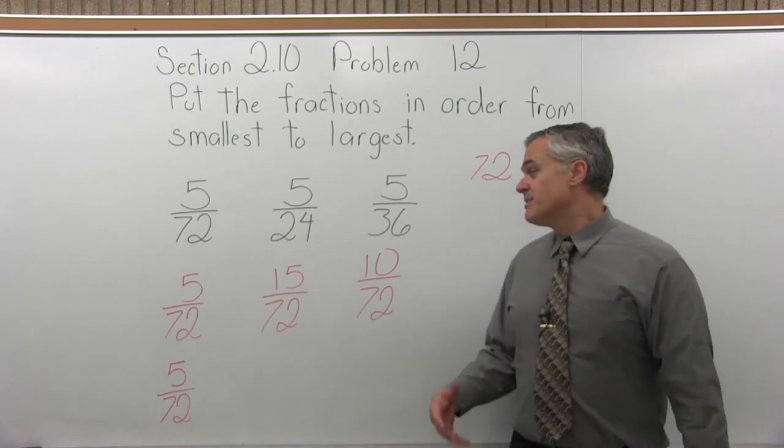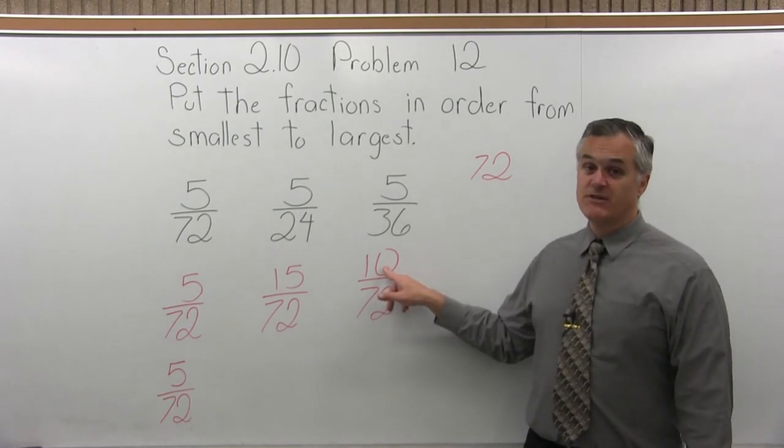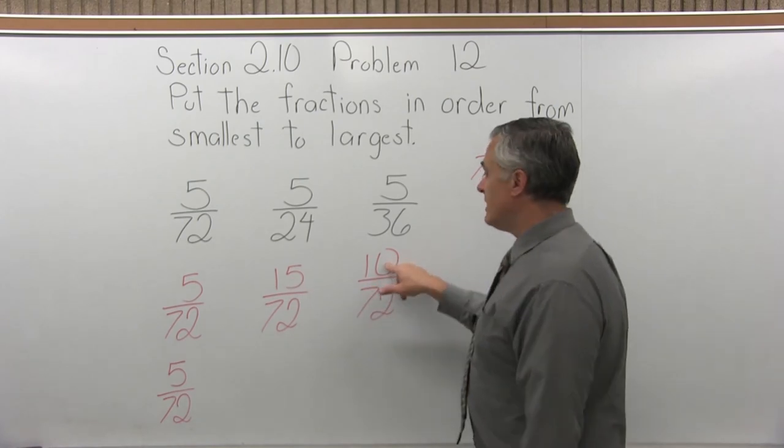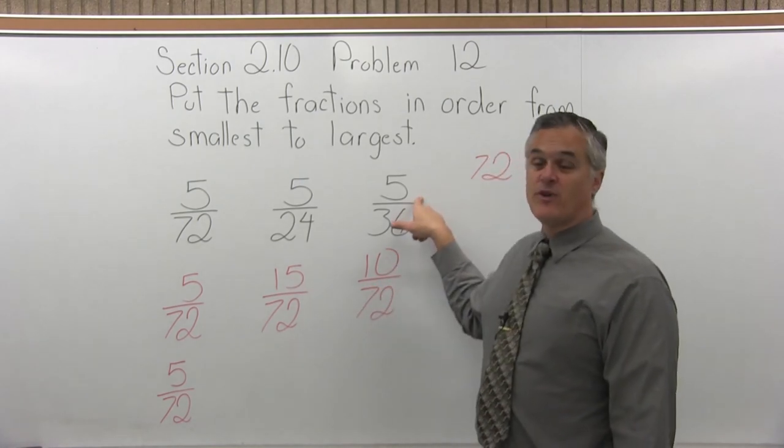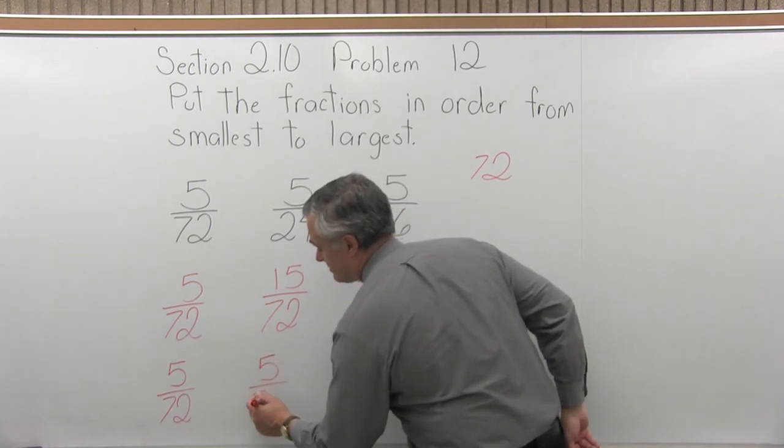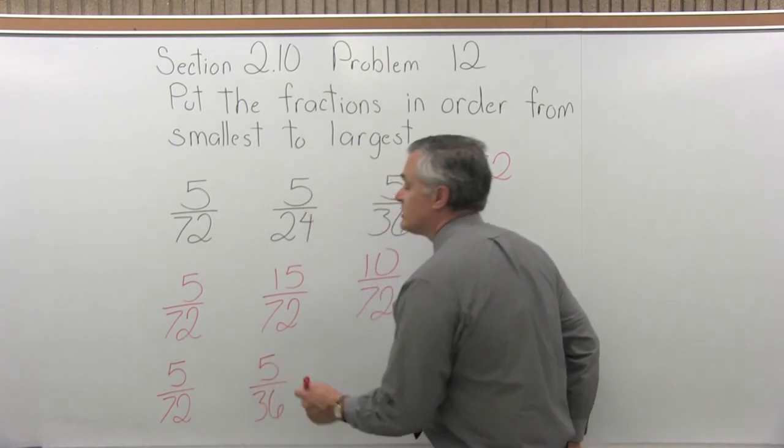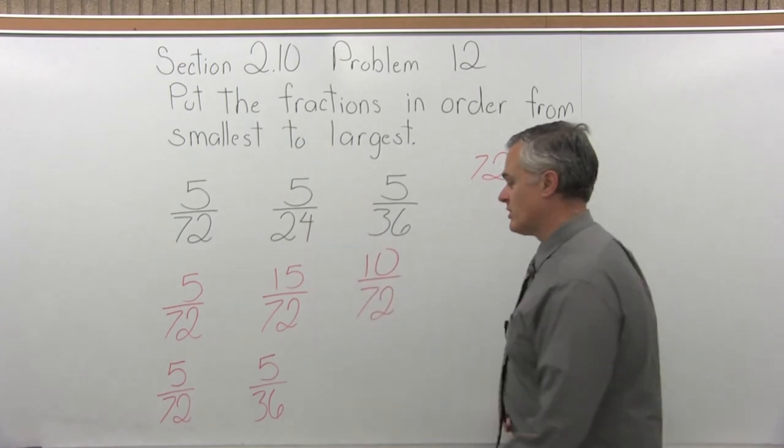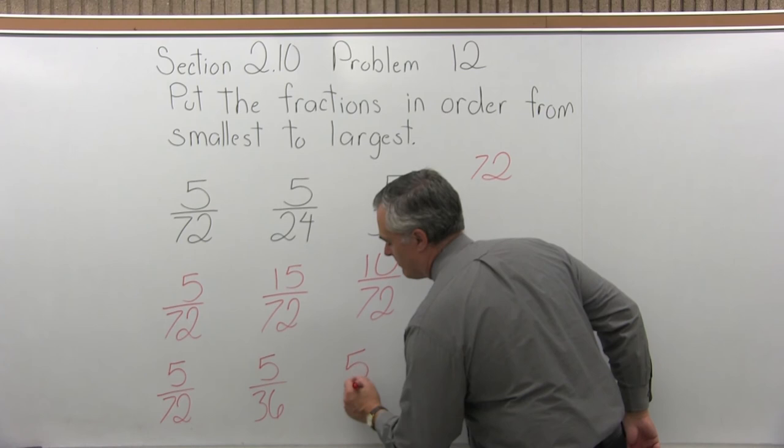Now the next biggest fraction would be 10 over 72, because it's smaller than 15 over 72. The 10 over 72 originally came from 5 over 36. So that will be my middle fraction. And then the largest one would be the 15 over 72, and its original form was 5 over 24. So that will be my biggest fraction.